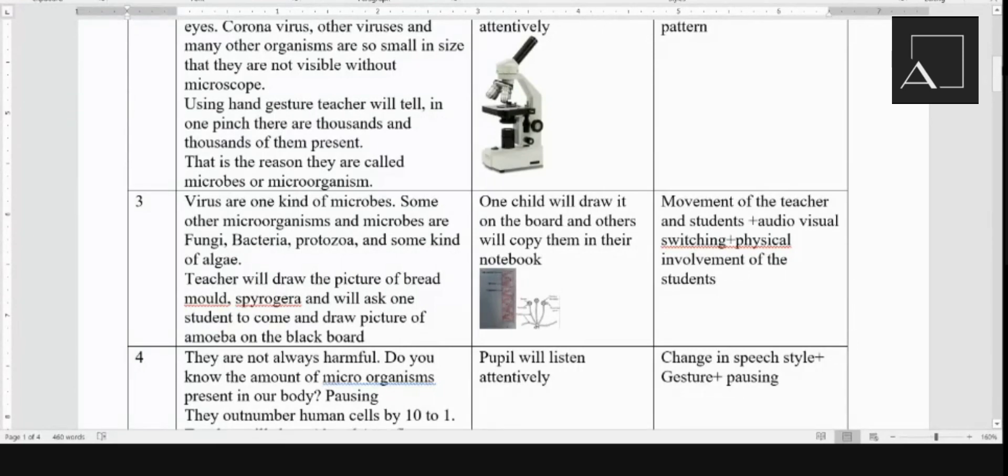Then a teacher will draw the picture of bread mold, spirogyra, and they'll ask one student to come and draw a picture of amoeba on the blackboard. So one child will draw it on the board and others will copy them in their notebook. That will include movement of the teacher and student, audio-visual switching, and physical involvement of the student.